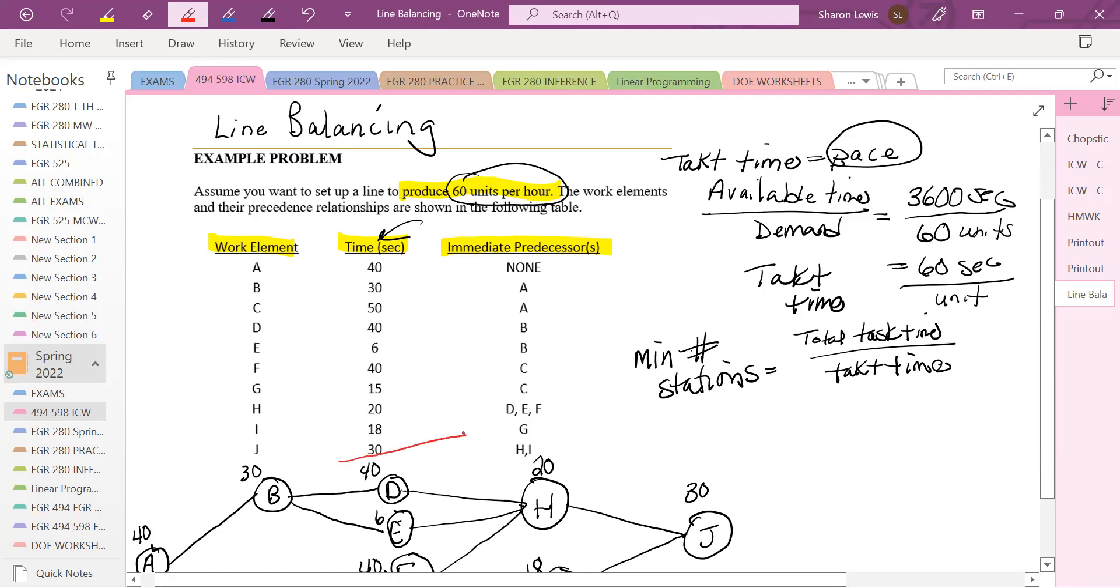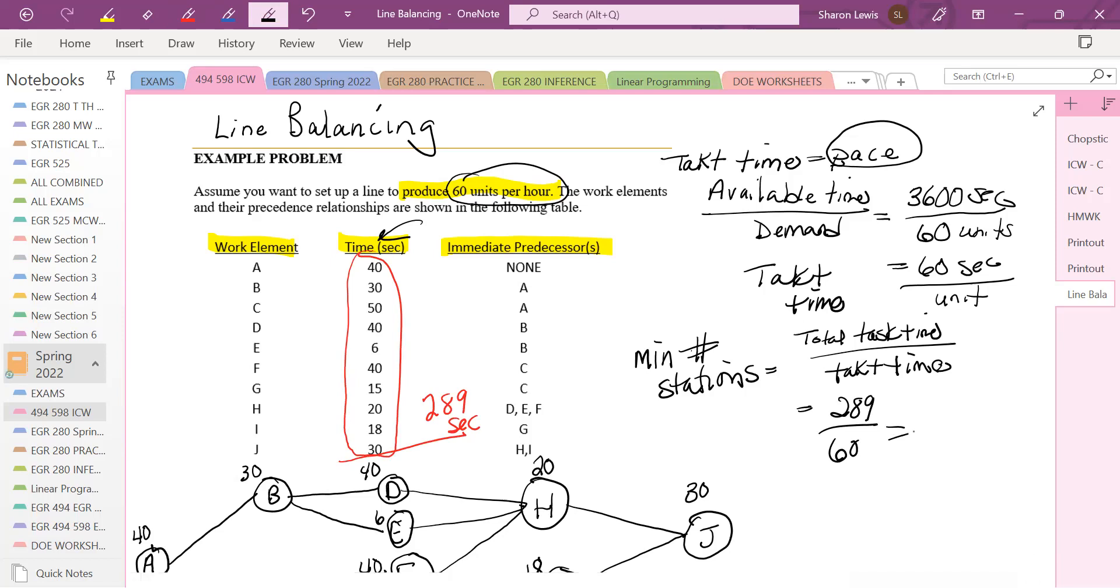So the minimum number of stations is calculated as the total task time divided by tact time. And if you think about it, that's actually logical. We look at how long it takes to produce one of those units, and then the pace that it has to work out. And that's going to tell us the stations, the number of stations that will have to move this through. If I add up the total task time, it's 289 seconds. And then our tact time is 60. So that is equal to 4.82. Well, we can't have 0.82 of a station. So we have five stations as the minimum.